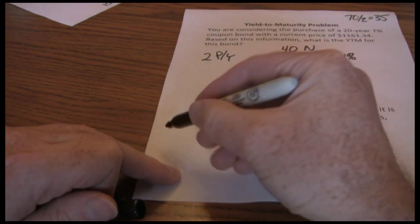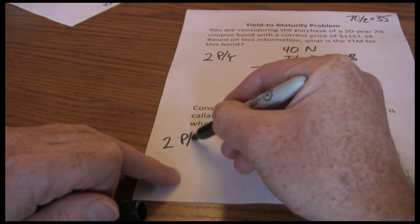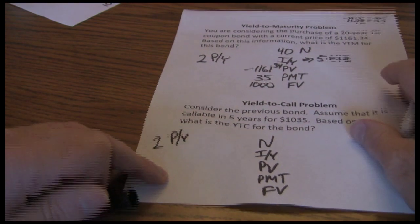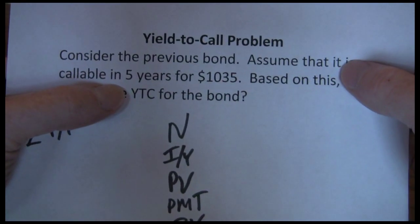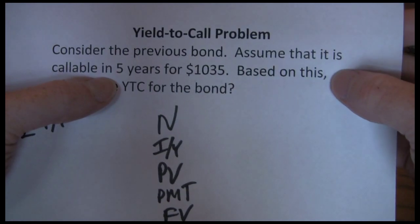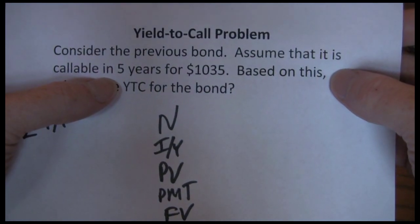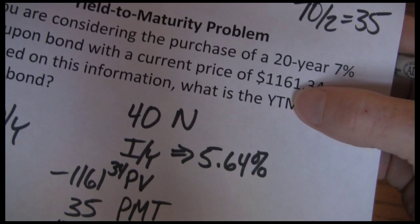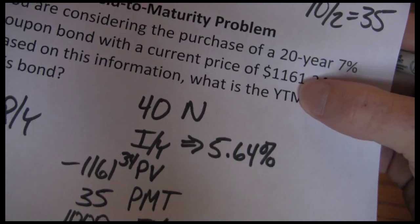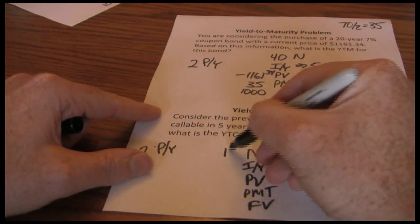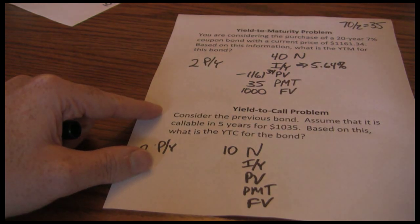We're still going to use the two periods per year approach — this is a semi-annual bond. The bond is callable in five years for $1,035, which means the company can call the bond after five years have gone by. So instead of holding the bond for 20 years as we assumed for yield to maturity, we now only get to hold it for five years. That means our N is 10, for 10 semi-annual periods.